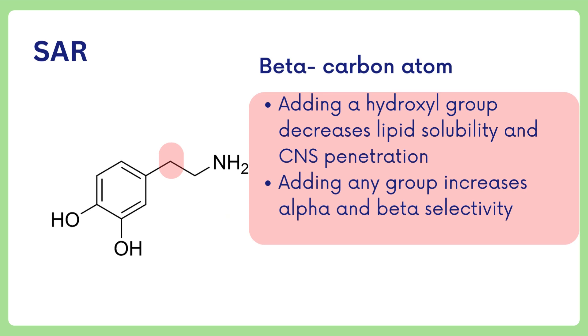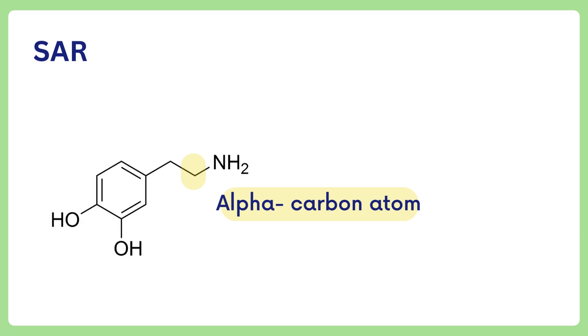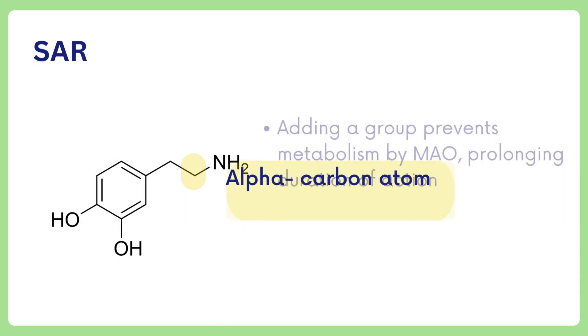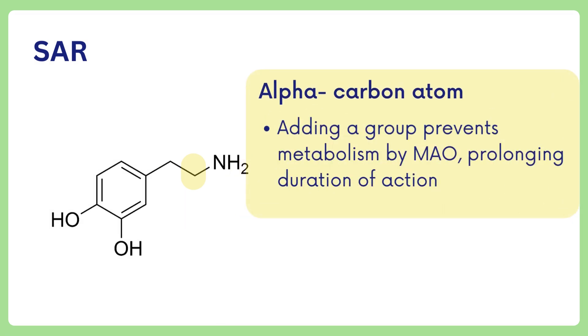The alpha-carbon is the second carbon. Adding a group on the alpha-carbon prevents metabolism by monoamine oxidase, prolonging the duration of action.